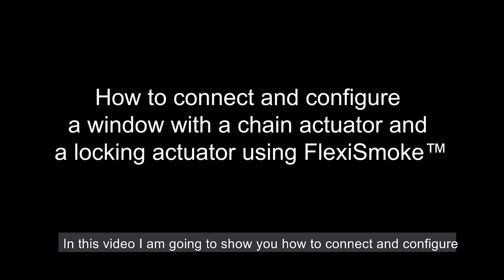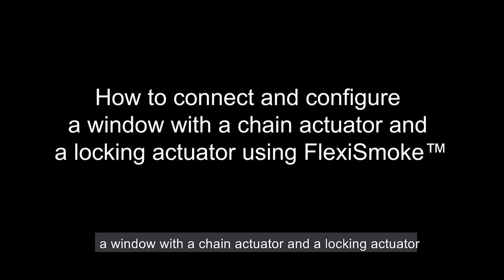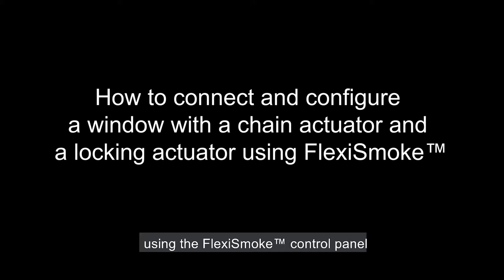In this video I'm going to show you how to connect and configure a window with a chain actuator and a locking actuator using the FlexiSmoke control panel.